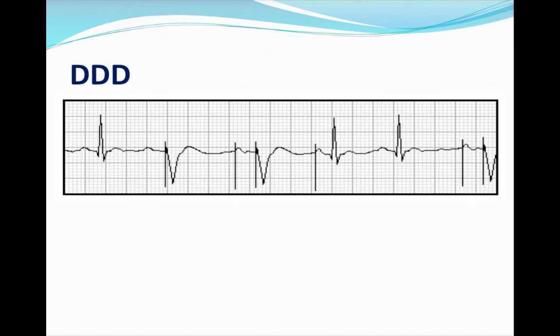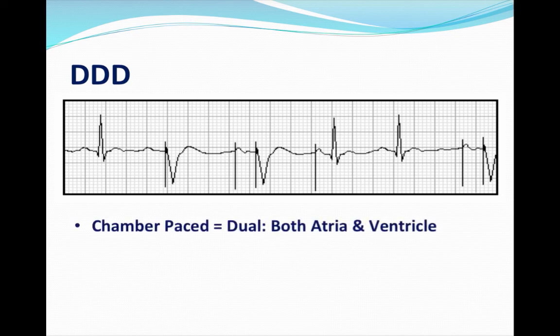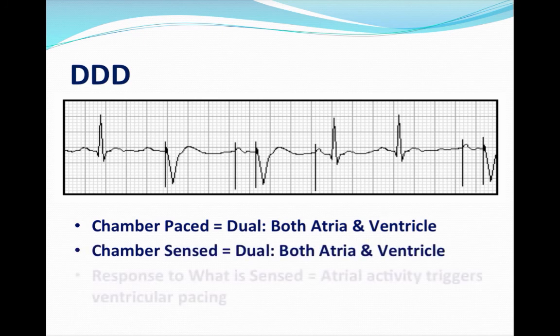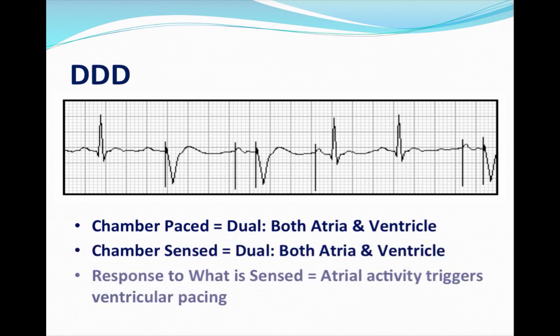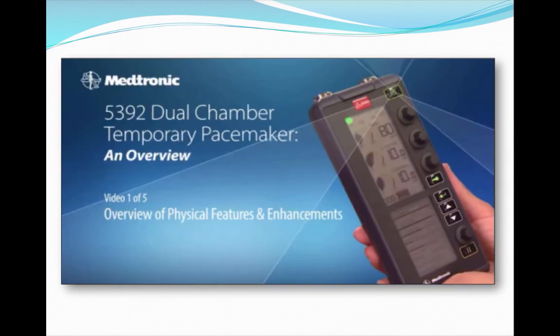DDD — the chamber being paced is dual (atria and ventricle), the chamber being sensed is also dual (both atria and ventricle), and the response is that atrial activity triggers ventricular pacing. And that's it — thanks for listening.